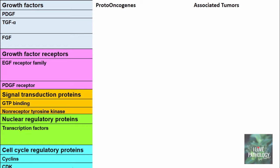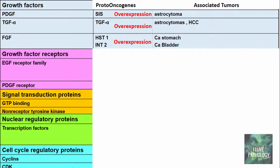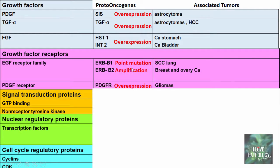For the category of growth factors, the proto-oncogenes are SAS, TGF-alpha, HST1, and INT2. The mode of activation is predominantly overexpression, and the associated tumors are astrocytomas, hepatocellular carcinomas, carcinoma of the stomach, and carcinoma of the bladder. For growth factor receptors, the proto-oncogenes are ERBB1, ERBB2, and PDGFR. ERBB1 is activated by point mutation, causing squamous cell carcinoma of the lung; ERBB2 is activated by amplification, associated with breast and ovarian carcinomas; and PDGFR overexpression is associated with gliomas.